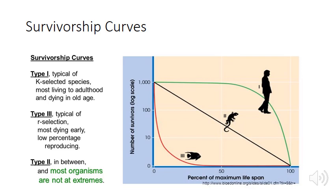On the y-axis of these survivorship curves we use a logarithmic scale. That's because if we used an arithmetic scale, you would see a curve in the survivorship line even if mortality rates weren't actually changing with age. By using a logarithmic scale, we see a straight line in the Type 2 curve where mortality rates aren't changing with age.